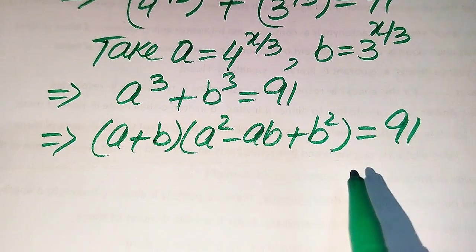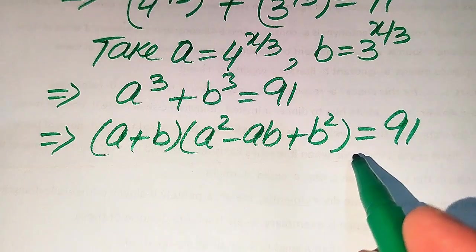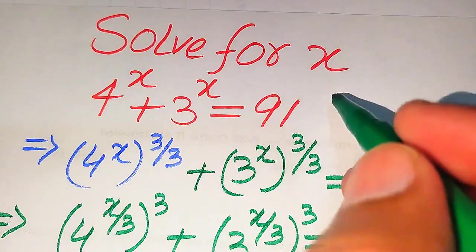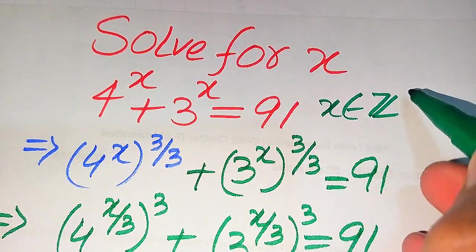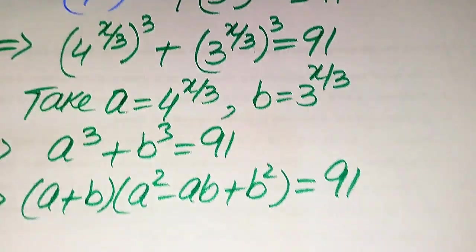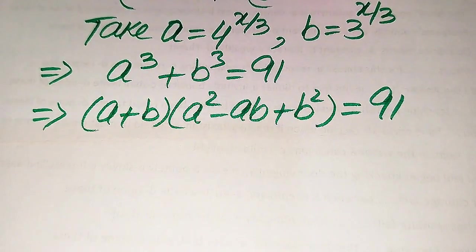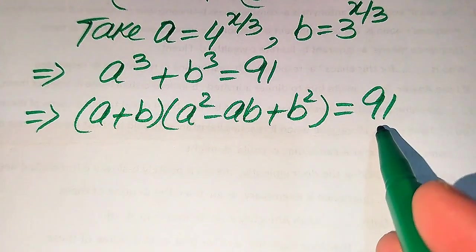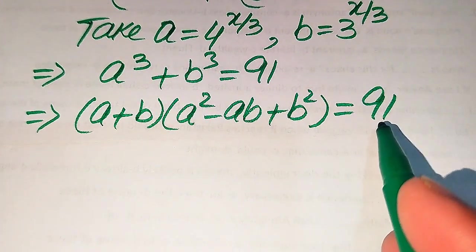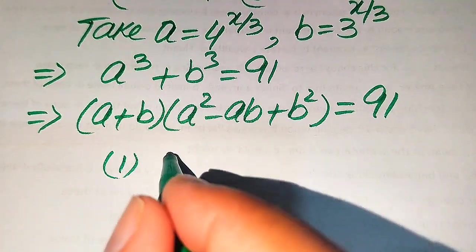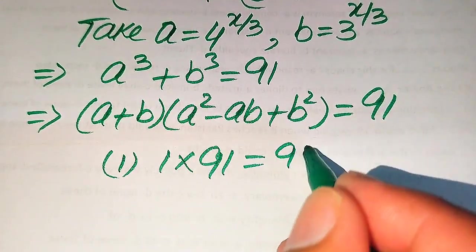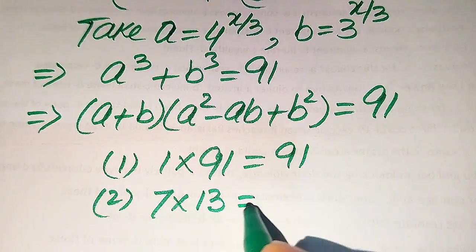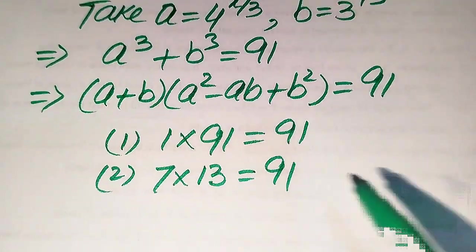Here we need to find the factors of the right hand side. Note that we solve this problem for positive integer solutions of x. We find pairs of positive integers whose product is 91. The possibilities are: first case, 1 times 91 equals 91; second case, 7 times 13 equals 91.